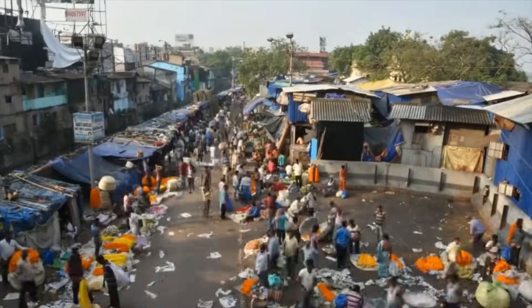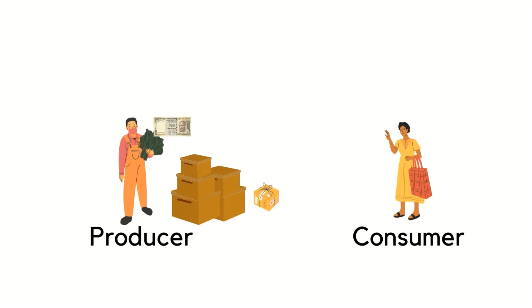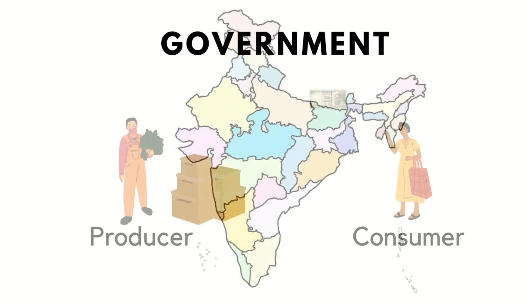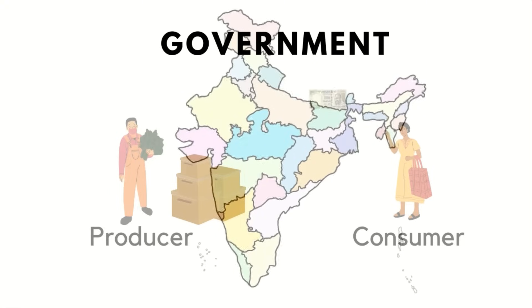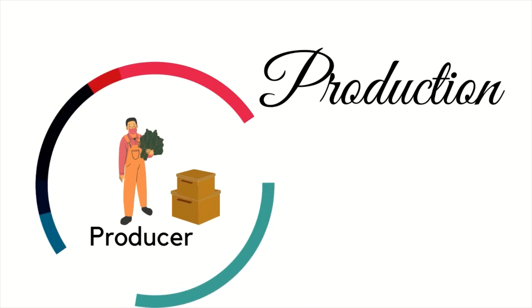In any economy, there are some producers who make things and some consumers who buy and use those things. There is also a government that ensures everything is going right. When we talk about the Indian economy, we look at production, consumption, and what steps the government takes to increase them. To understand production better, we will divide it into sectors.